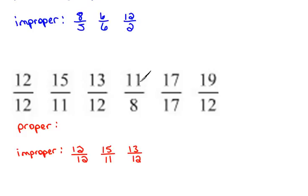Next, we have 11 eighths. Again, the numerator is larger, so that is an improper fraction.